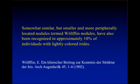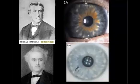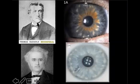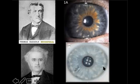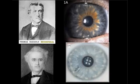These Brushfield spots could actually be considered a variant of smaller spots noted more peripherally in the lightly colored irides of individuals without Down syndrome, which were described as Wilflin nodules, described in 1902. Here is a picture of Wilflin and here of Thomas Brushfield. In Down syndrome, the spots are mid-periphery and larger, seen in lightly colored irides. As Wilflin noted, 10% of the normal population with lightly colored irides will have these more peripheral and somewhat smaller spots.